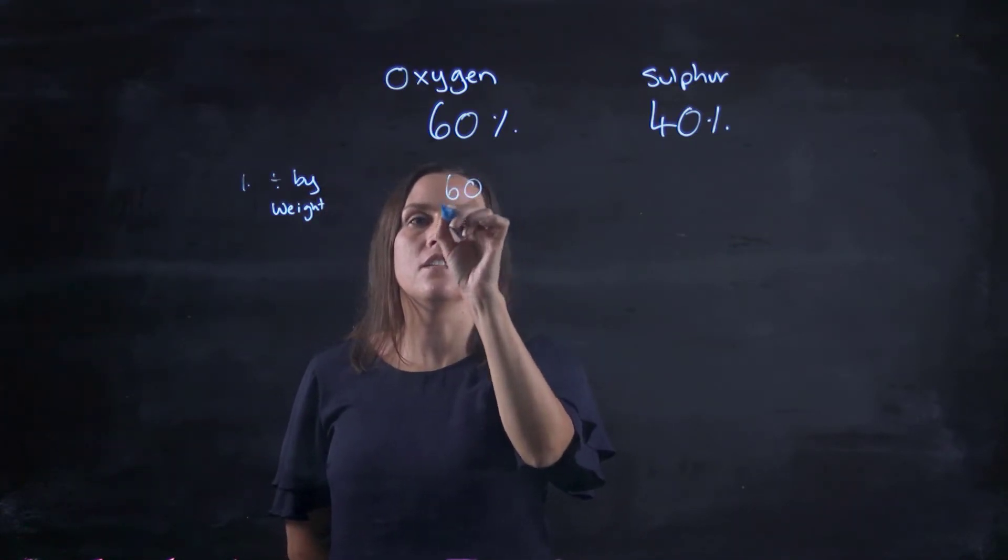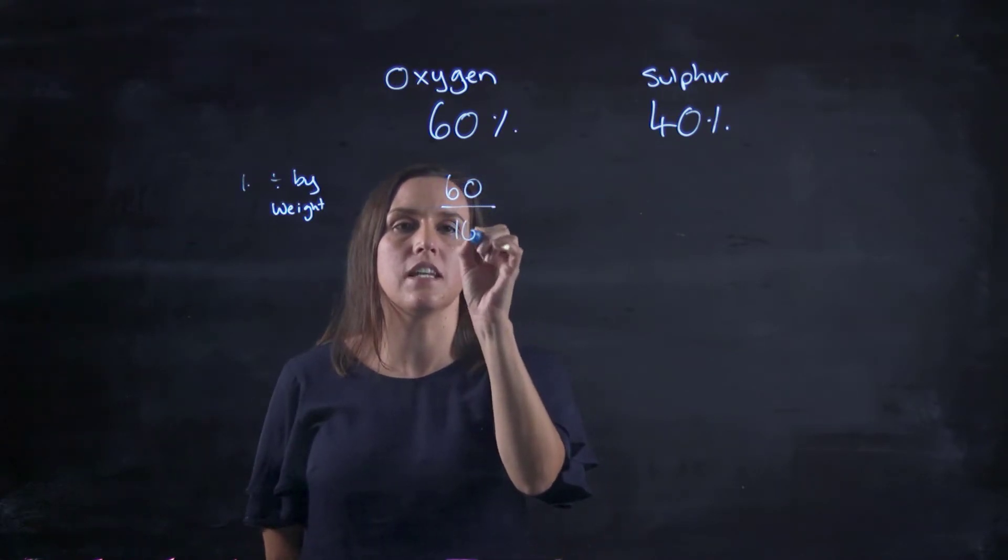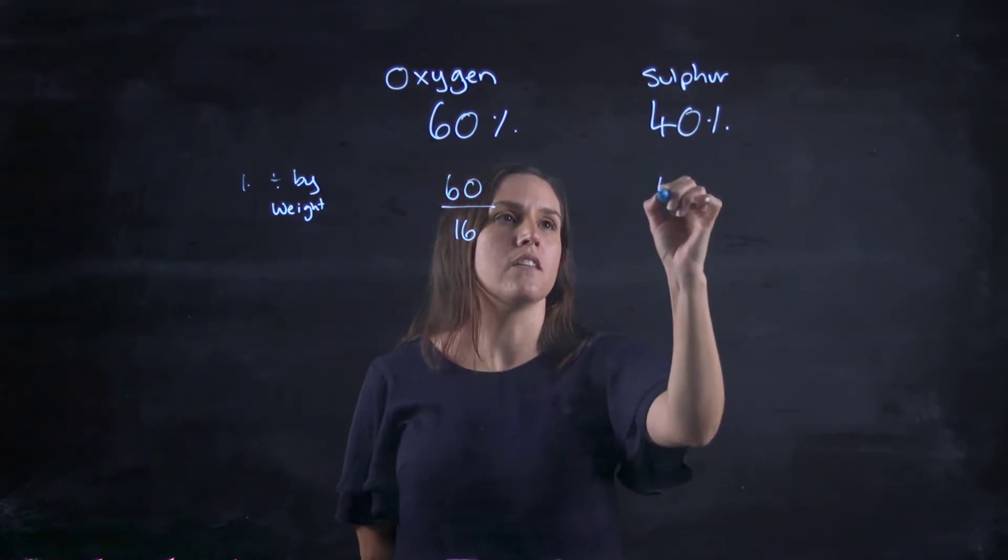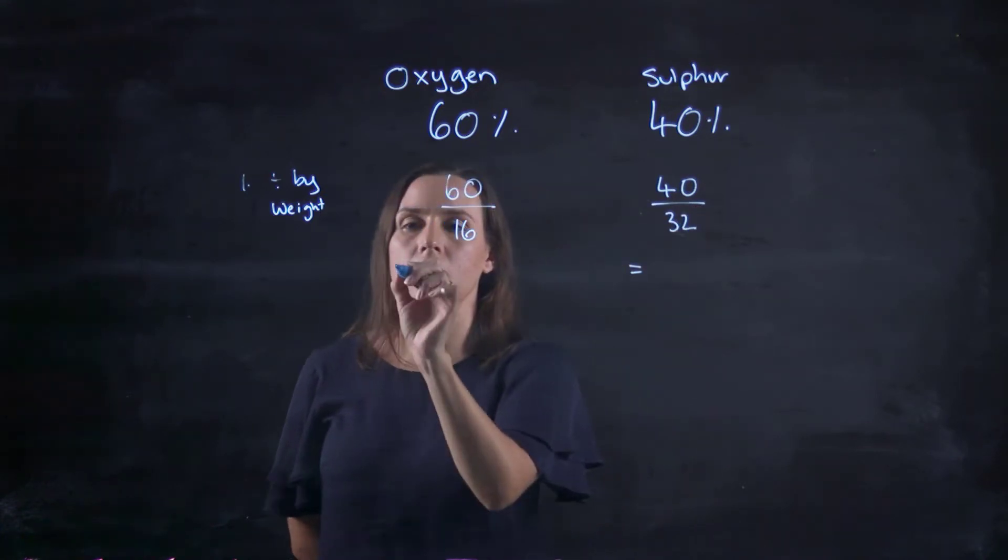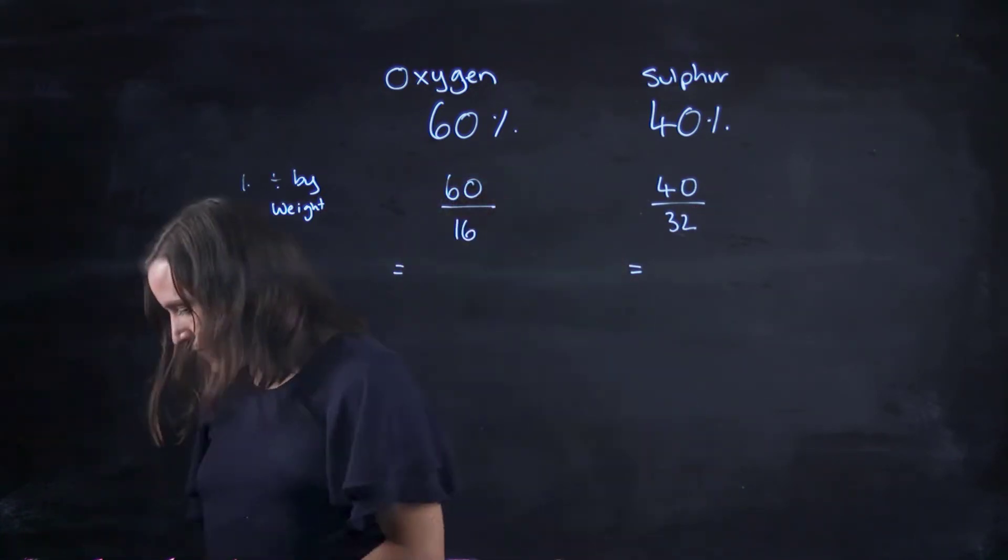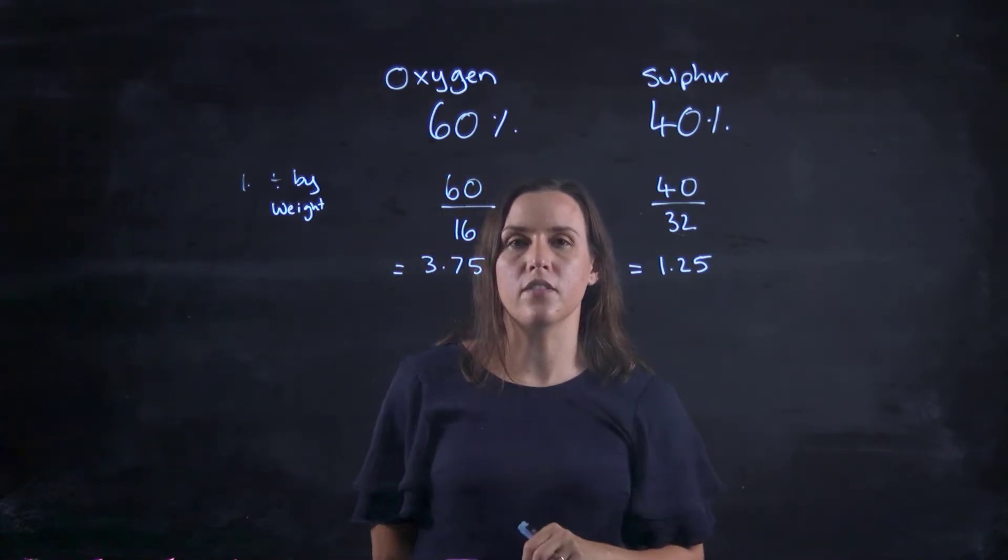So 60 divided by, and if I look up oxygen on the periodic table, it's 16, and sulfur would be 40 divided by 32. And I'll get the values for those. So then I end up with 1.25 and 3.75.